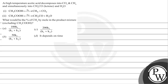Let's read this question: at high temperature, acetic acid decomposes into CO2 and CH4, and simultaneously into CH2CO (ketene) and H2O. These are the reactions given to us. What would be the percentage of CH4 by mole in the product mixture excluding CH3COOH? We will find out the percentage of methane by mole.